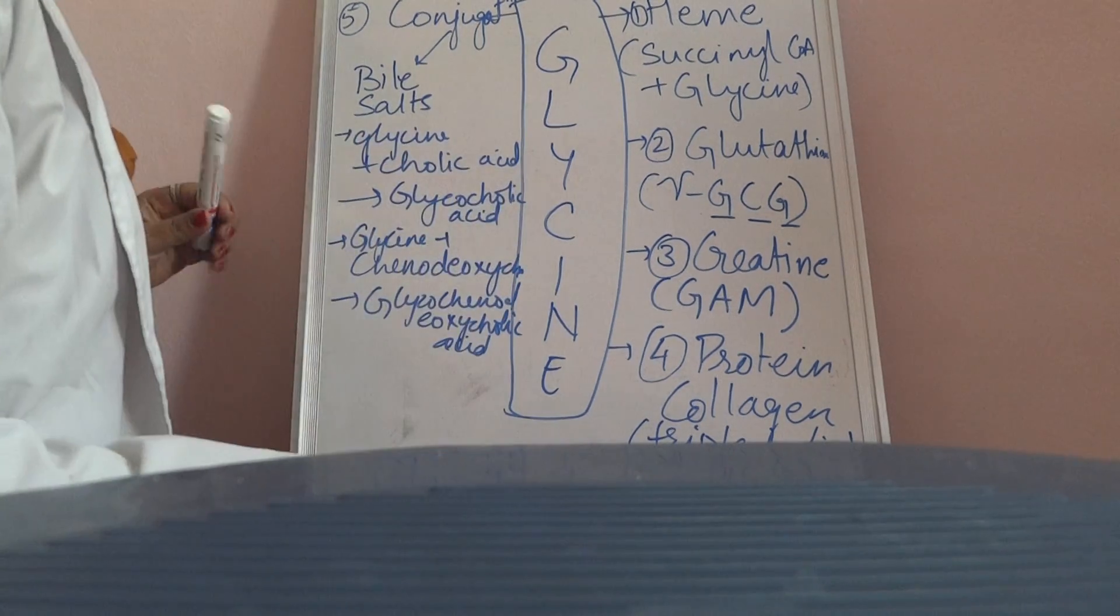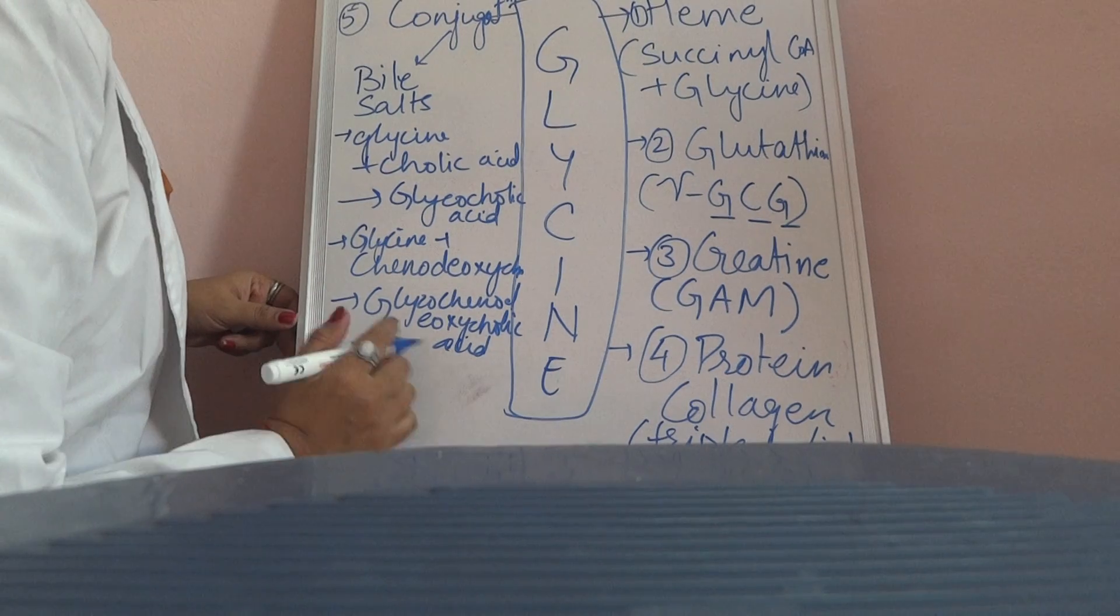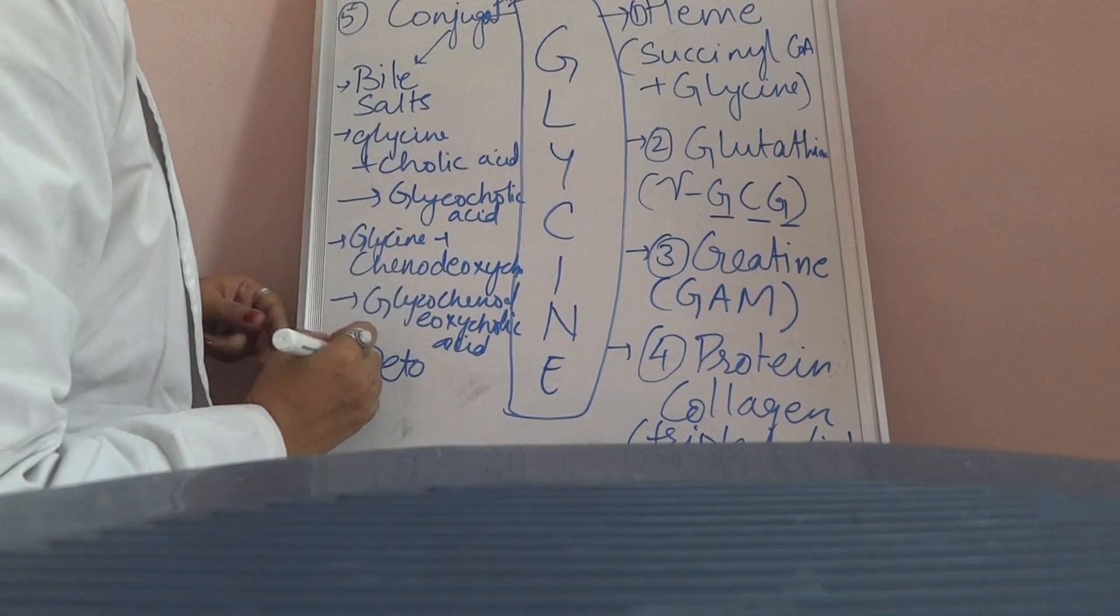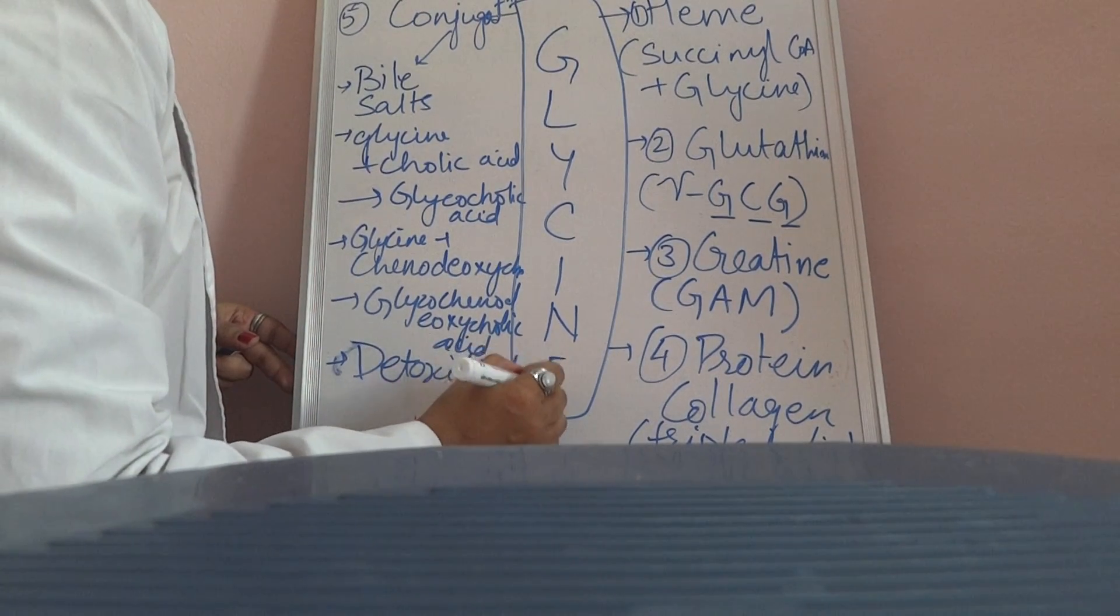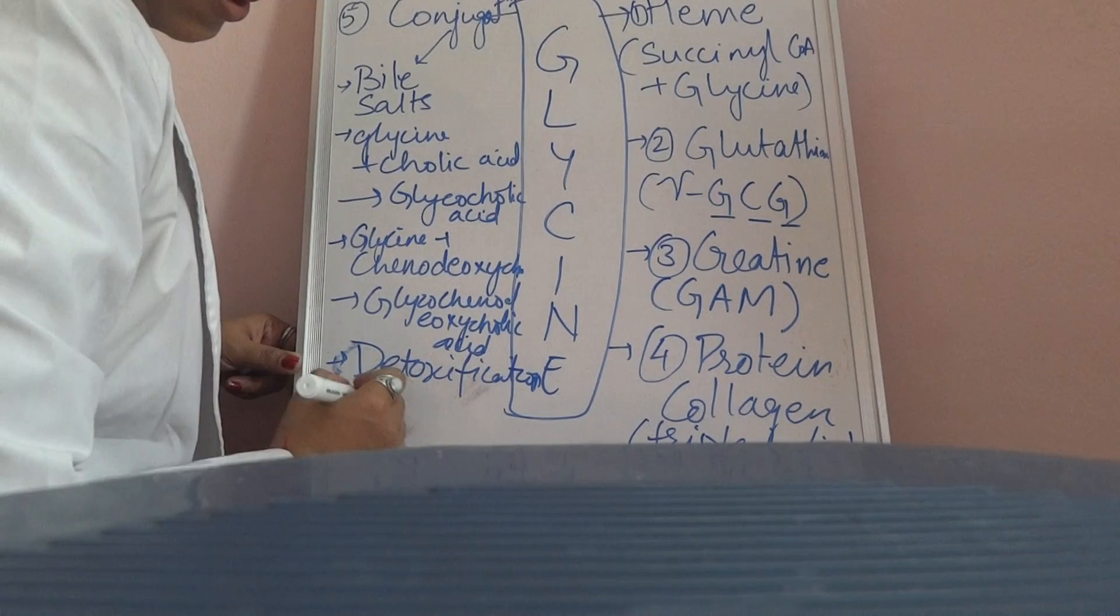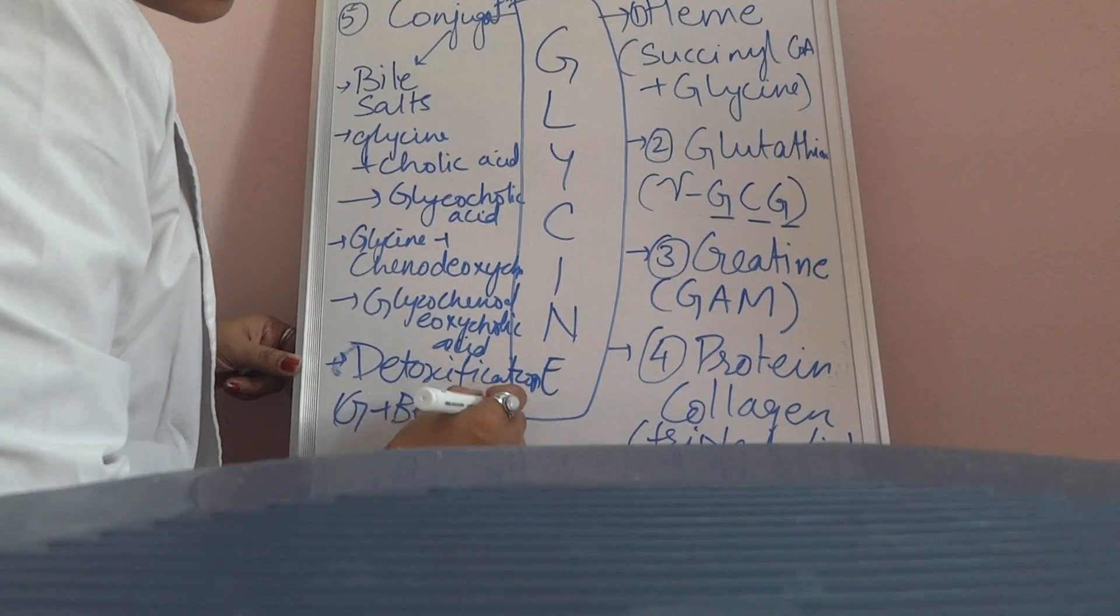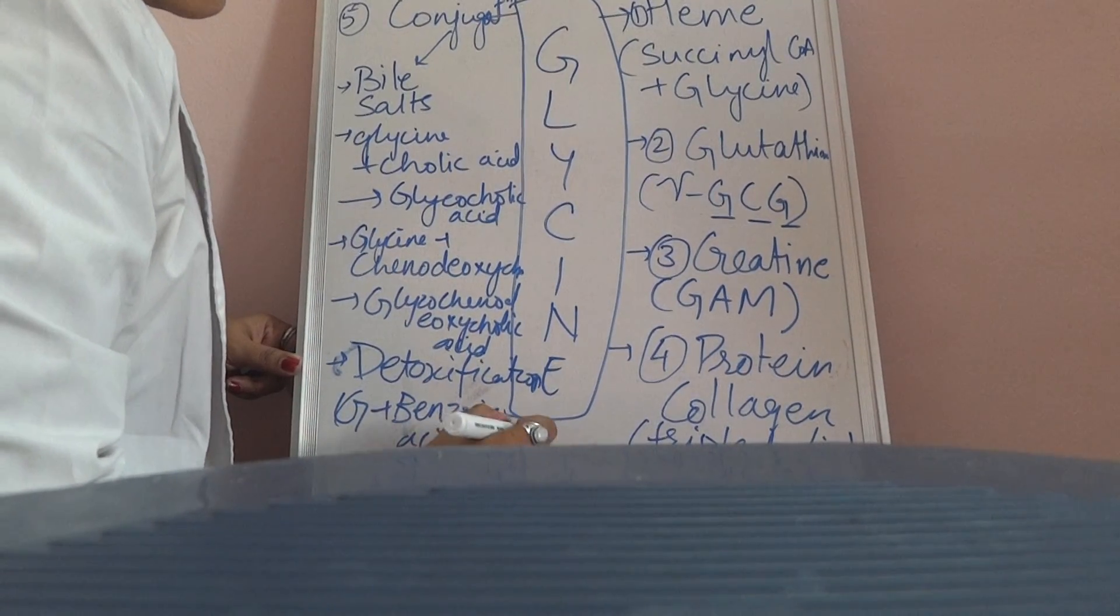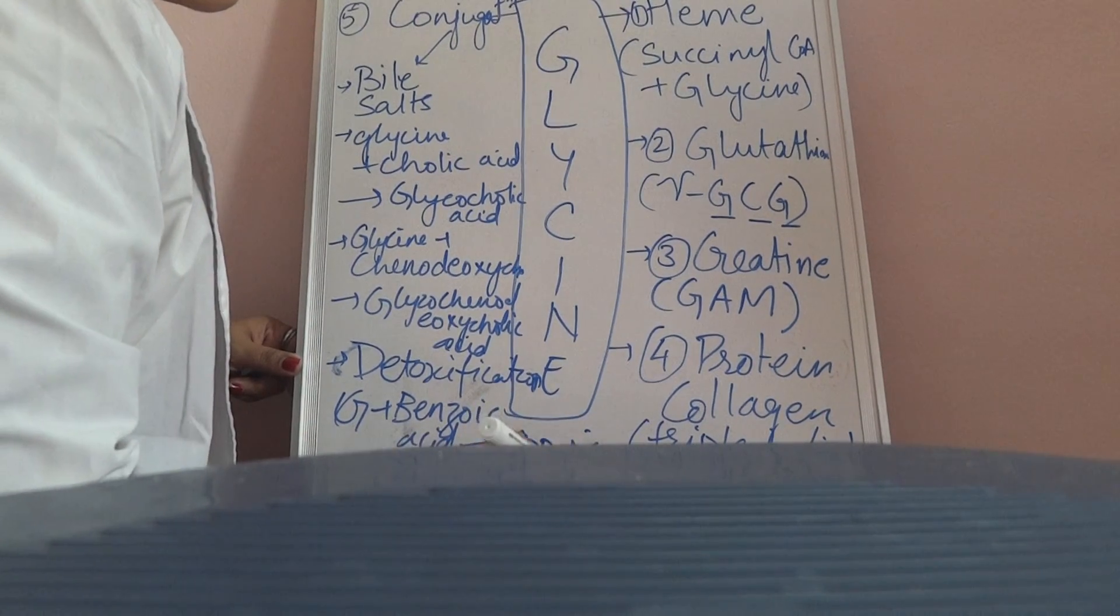Second is a detoxification reaction which is the part of conjugation reaction. Where Glycine combines with benzoic acid to form hippuric acid. And finally it is excreted in urine.